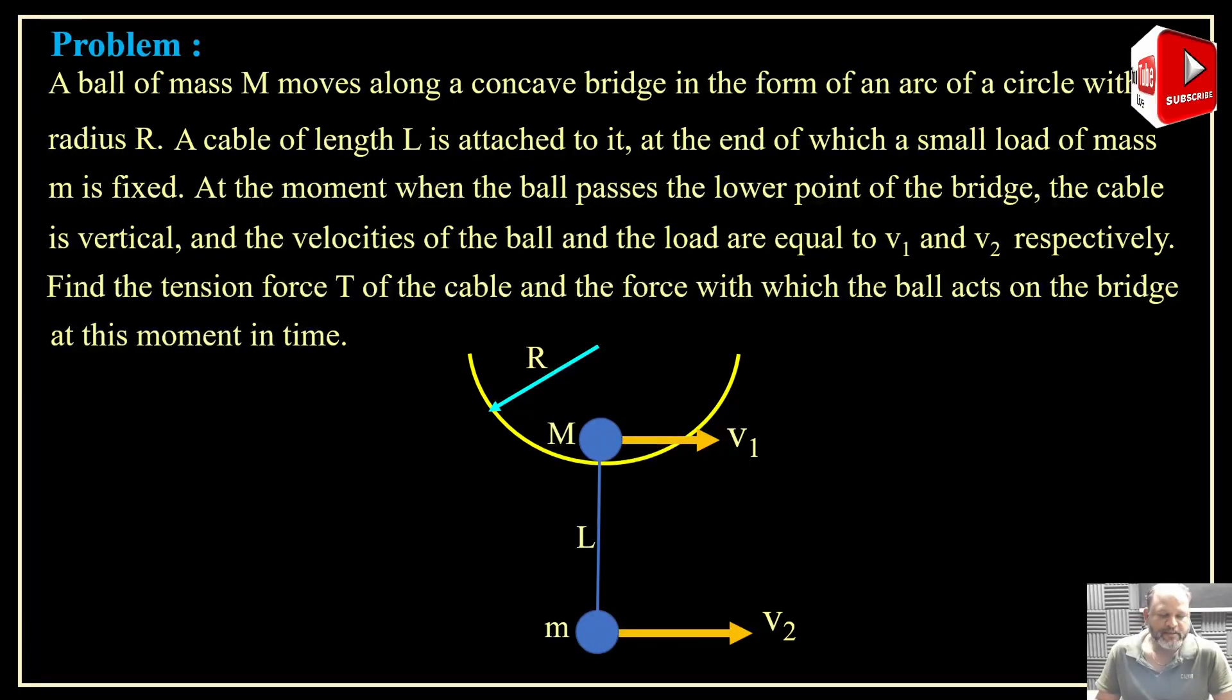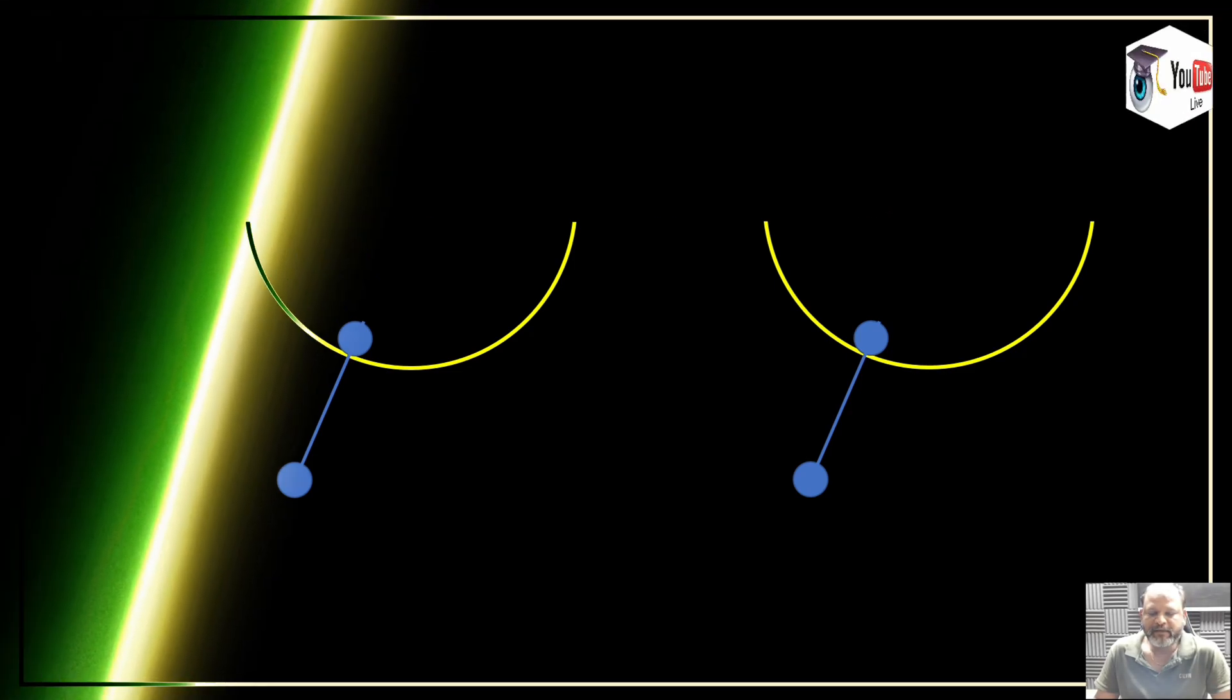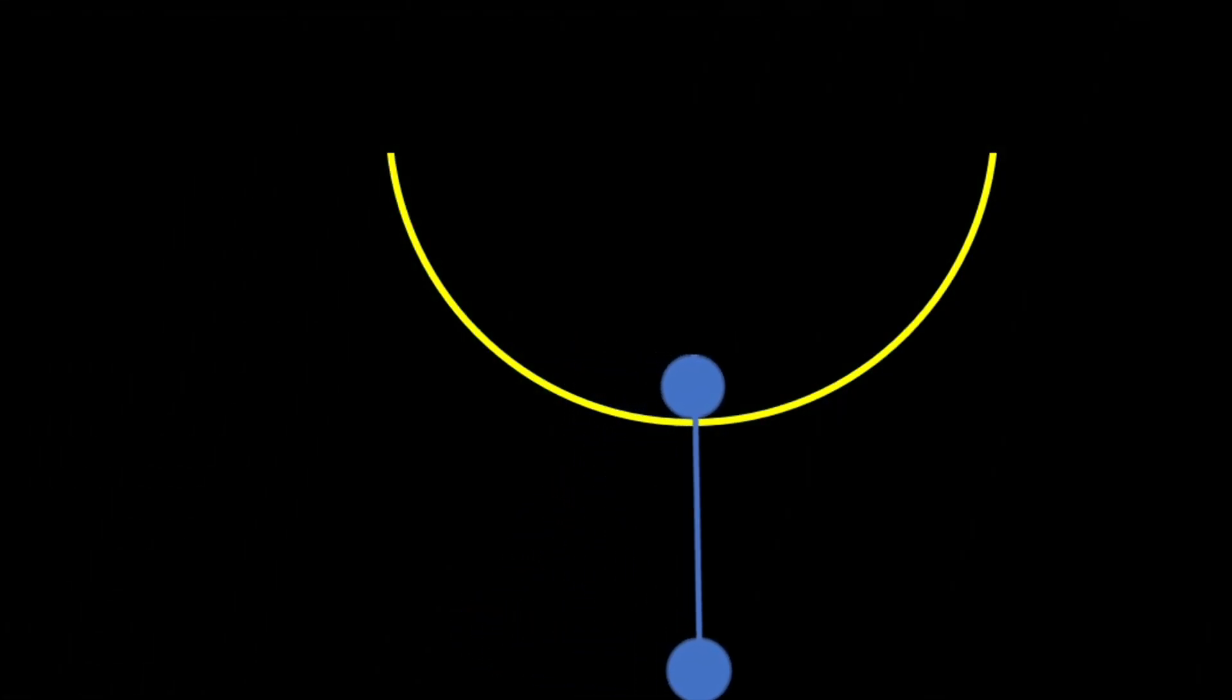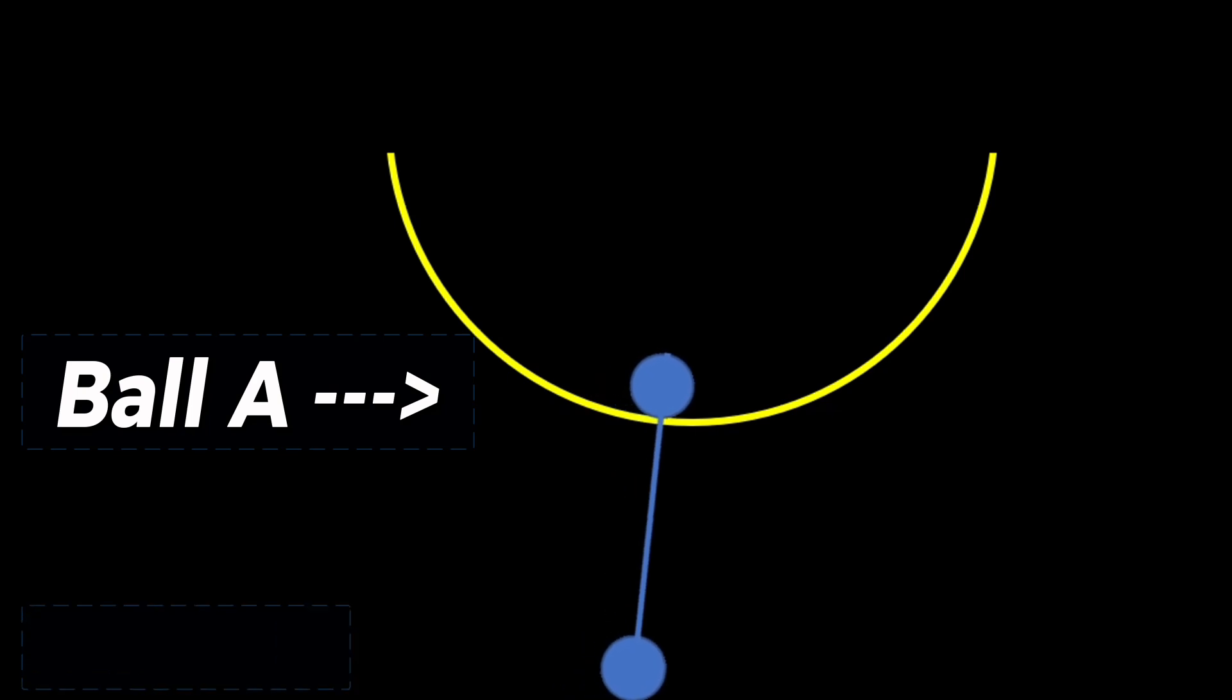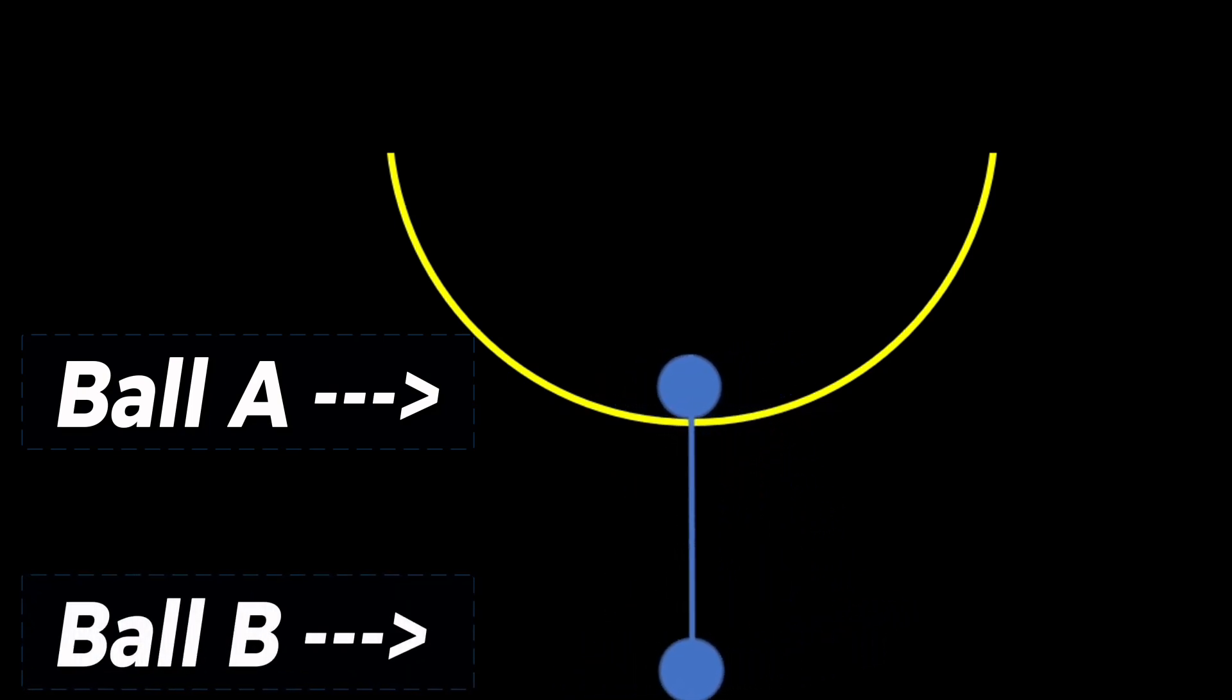So let's discuss the solution for this problem. You can see the ball A is moving in a circle of radius R which is the bridge. Now ball B is also moving in combined motion, but here most people will be making the mistake that ball B is moving in a circle of radius L plus R, which is not the case here. It may or may not be possible for certain velocities v1 and v2.